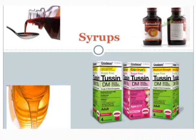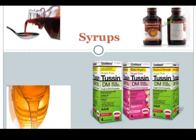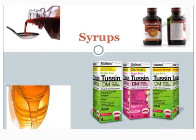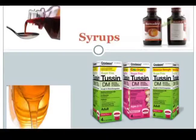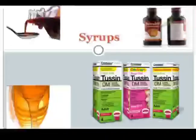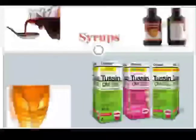In today's lecture, we will discuss the next part of monophasic liquid dosage forms, specifically the examples used for internal purposes: first is mixture, second is syrup, third is elixir, and fourth is linctus. In the previous lecture, we discussed the definition of monophasic liquid dosage form — also called a true solution or homogeneous clear mixture — along with its advantages, disadvantages, and classification.